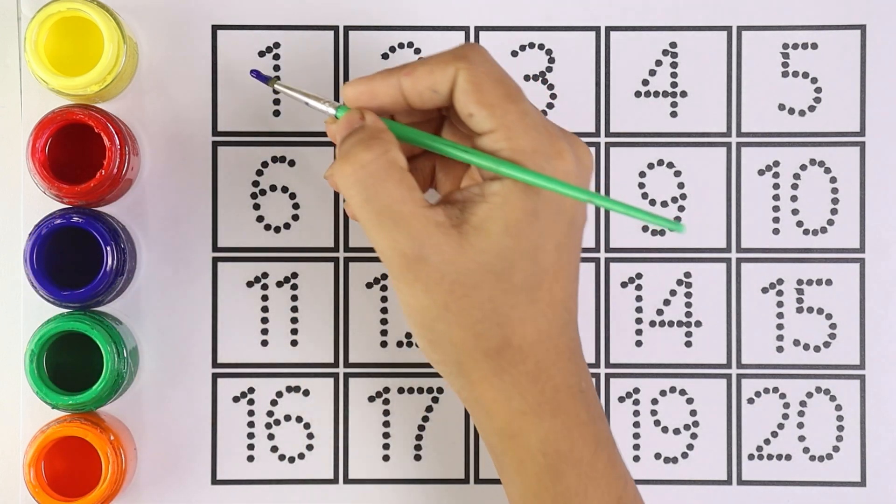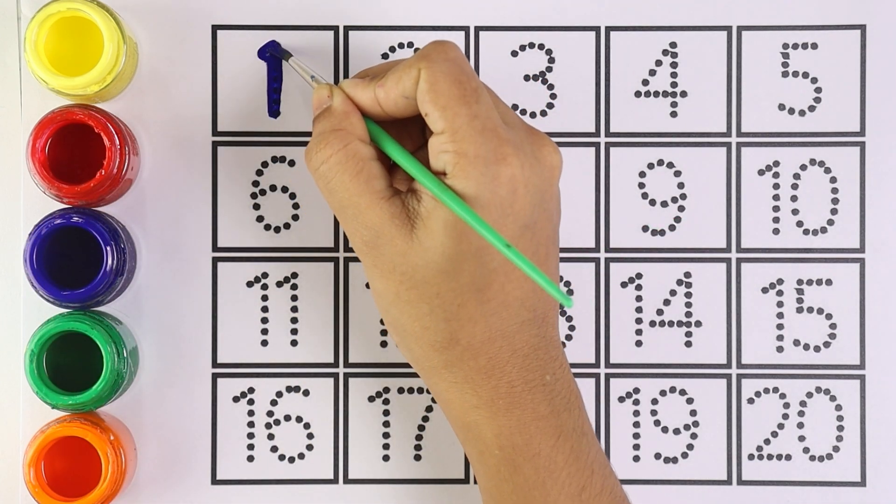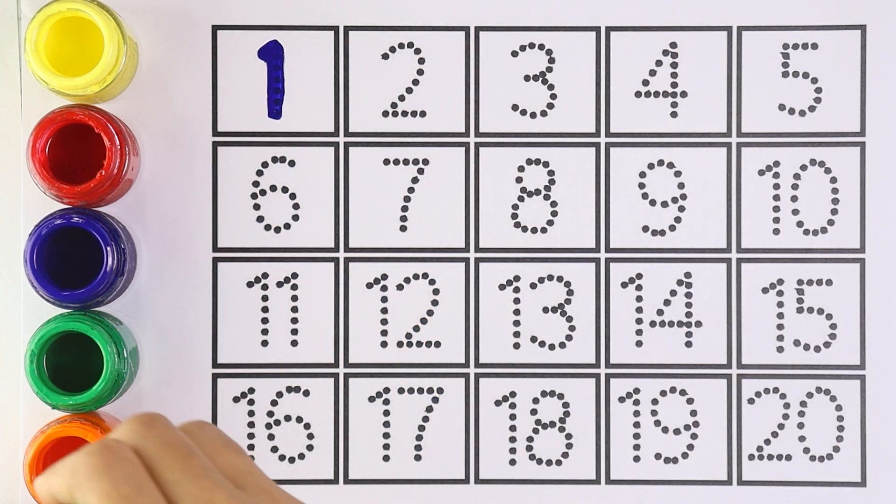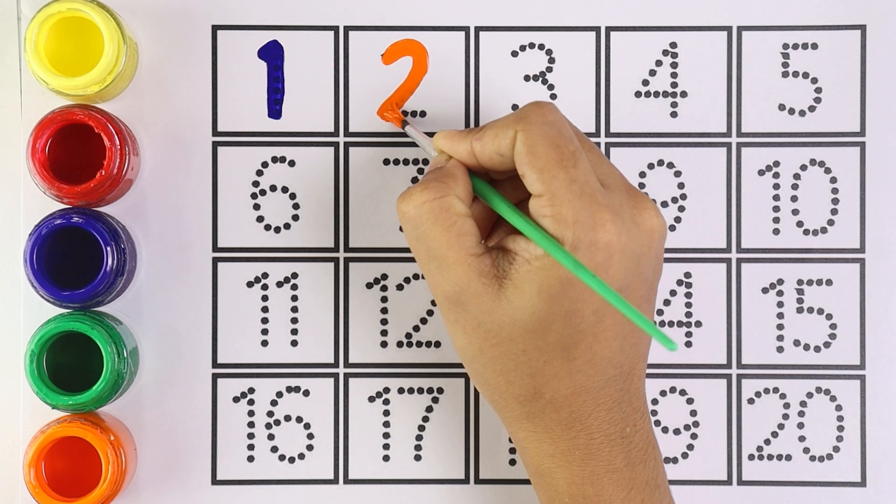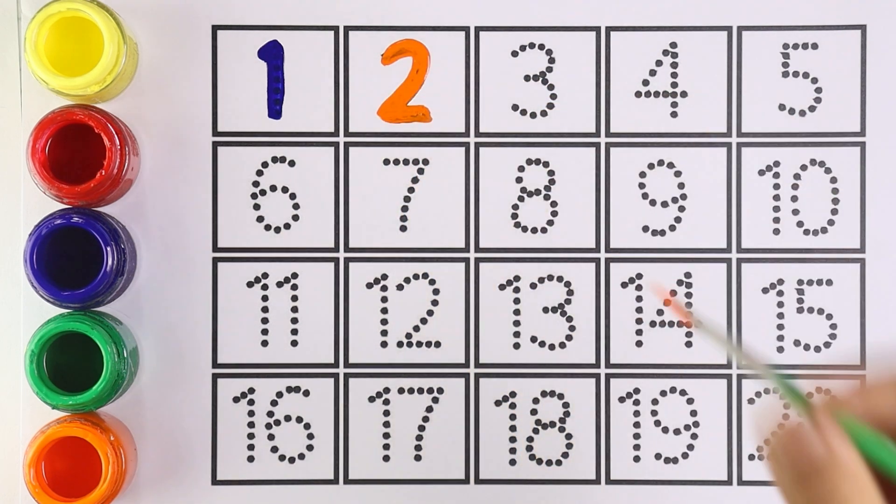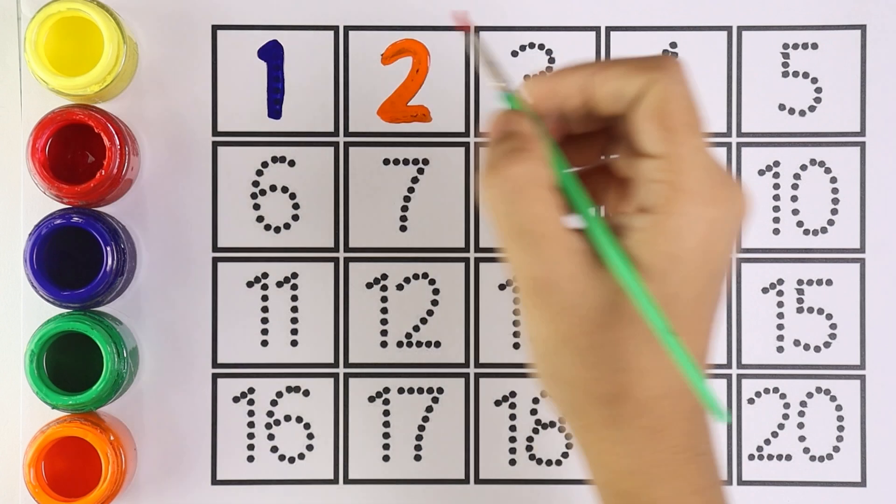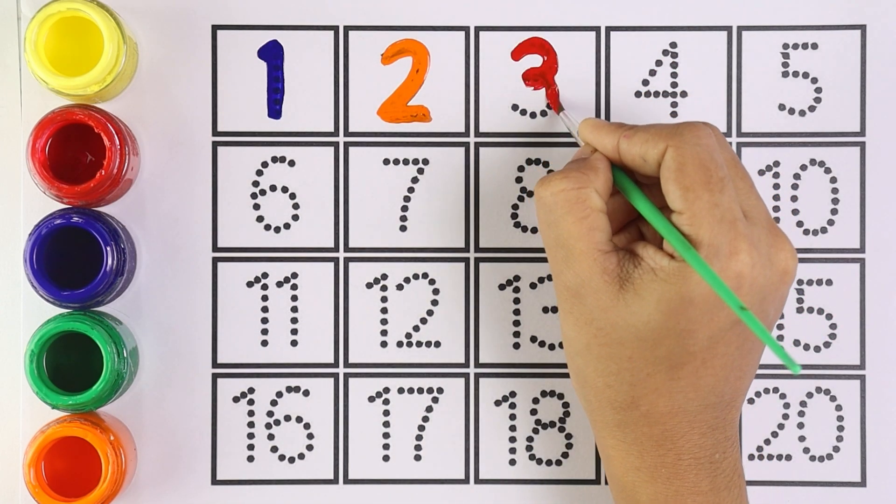Blue color, number one, number one. Orange color, number two, number two. Red color, I'm writing number three. Which number is this kids?